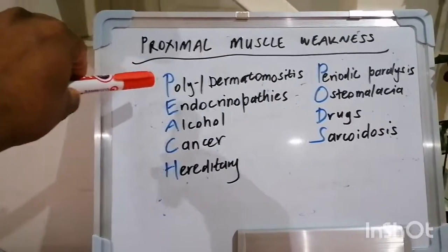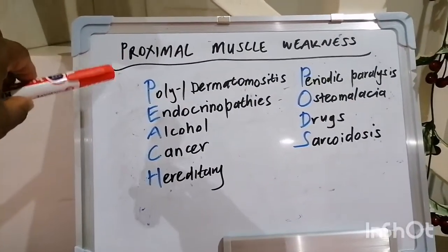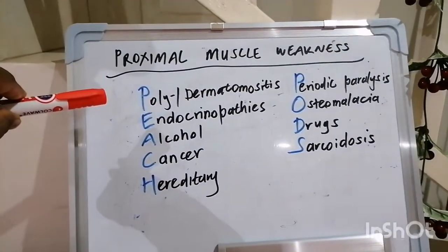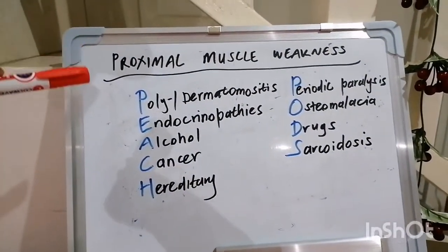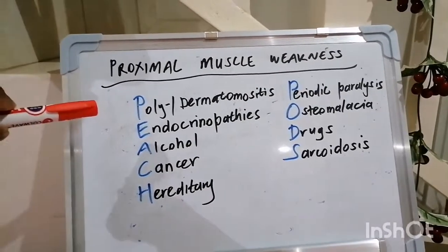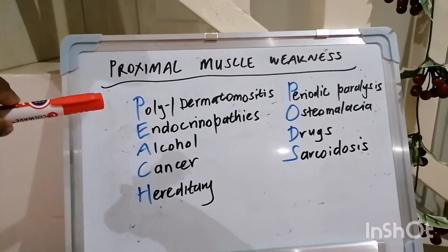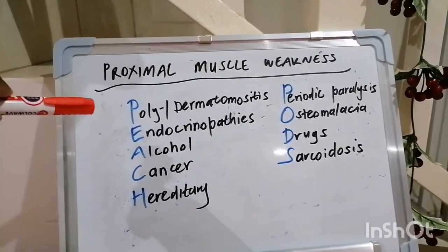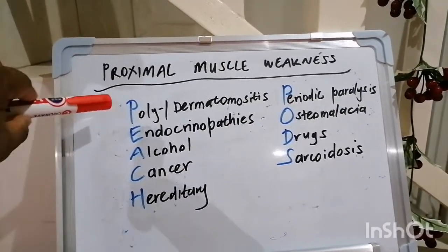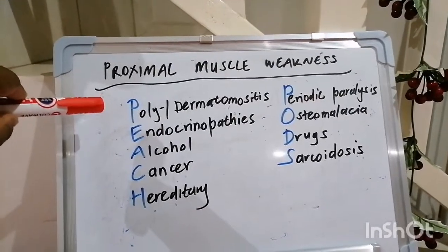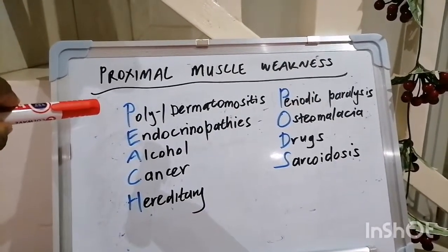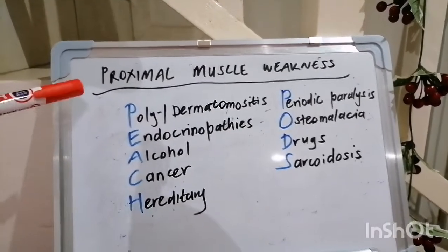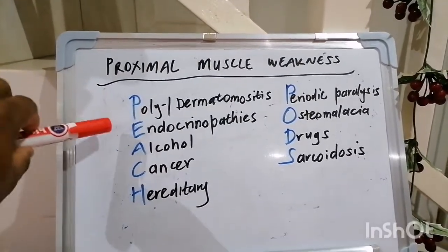So PEACH PODS: P stands for poly- or dermatomyositis. The suffix '-itis' implies there's some kind of inflammation going on. So in addition to proximal muscle weakness, you're also going to have an increase in your skeletal muscle enzymes. If you do your CK or creatine kinase level, it's going to be high invariably if you're dealing with polymyositis or dermatomyositis. This also tends to keep company with other rheumatological issues, so be on the lookout for lupus and rheumatoid arthritis and other rheumatological conditions which can manifest with polymyositis or dermatomyositis.